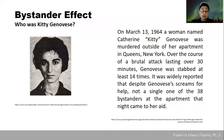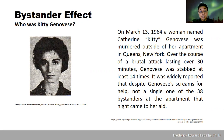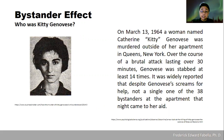What happened to her? On March 13, 1964, a woman named Catherine 'Kitty' Genovese was murdered outside of her apartment in Queens, New York. Over the course of a brutal attack lasting over 30 minutes, Genovese was stabbed at least 14 times. It was widely reported that despite Genovese's screams for help, not a single one of the 38 bystanders at the apartment that night came to her aid.